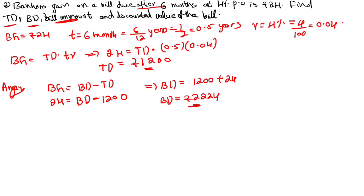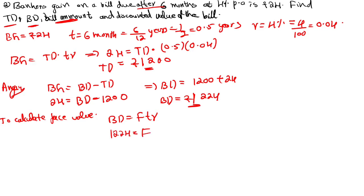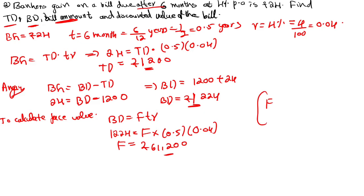Then you need to calculate face value. I am using the formula BD equals F×t×r — it is easy. BD equals F×t×r: BD (banker's discount) we have equals 1224, equals face value (to calculate) × t (0.5) × r (0.04). Simplifying, F value is equal to rupees 61,200. Or you can apply the formula face value equals (BD × TD) / BG — that will give the same answer.